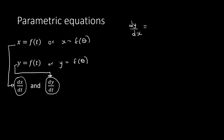We can easily get dx/dt and dy/dt, so how do we convert that to dy/dx? The easy way is by saying dy/dx equals dy/dt over dx/dt — your dt and dt will cancel, leaving dy/dx. Other textbooks say dy/dt times dt/dx, which is the opposite of dx/dt. Either way, the dt's cancel and you get the same answer.